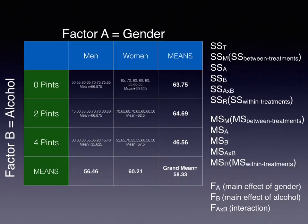All three — sum of squares A, B, and the interaction A times B — are all part of the between-treatments or model sums of squares. The other part of total sums of squares is the error term: sum of squares residual, also called sum of squares within treatments. We convert the last four of these to variance — mean square for the A factor, mean square for the B factor, mean square for the interaction — and we divide each one of these by the same denominator: the residual or within-treatments mean square, to calculate three different F values.